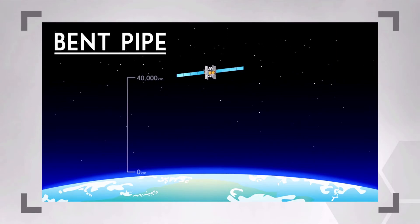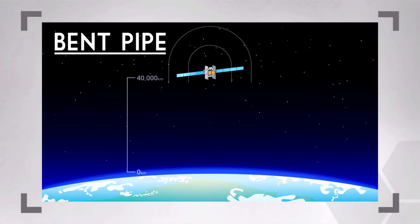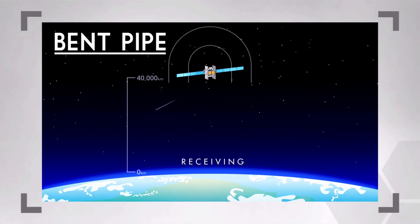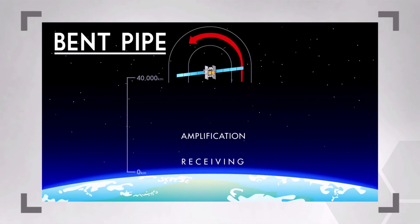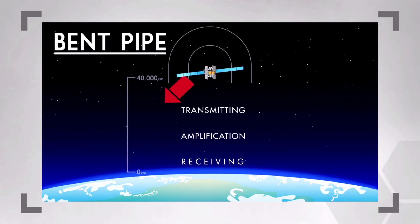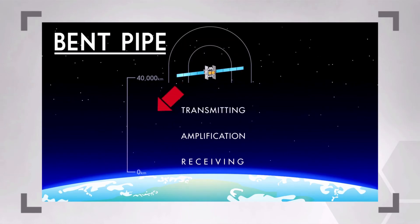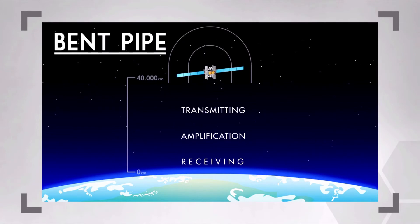The term 'bent pipe' comes from the order in which signals are received and then retransmitted. As shown in the simple diagram of data transmissions, after receipt of the signal, the uplink signal is amplified, translated to a downlink signal, re-amplified, and directed back to earth via high gain antennas. It flows in a similar fashion to that of a bent pipe in space.